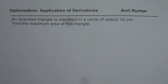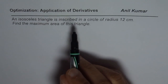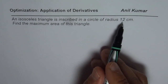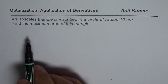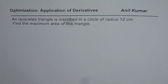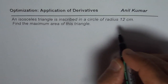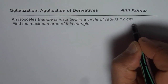I'm Anil Kumar. We are discussing optimization, that is application of derivatives. The question here is: an isosceles triangle is inscribed in a circle of radius 12 centimeters. Find the maximum area of this triangle. So let's sketch.